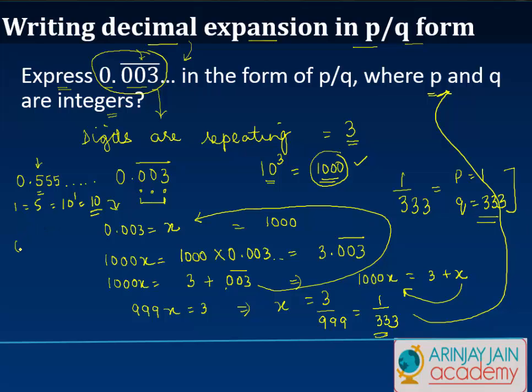If you had something like 0.474747 then basically we have 47 or 2 digits which are repeating themselves. So we are going to multiply this by 10 to the power 2 or 100. In similar fashion you can solve any of these decimal expansions and express them in a form of p by q where p and q are integers.